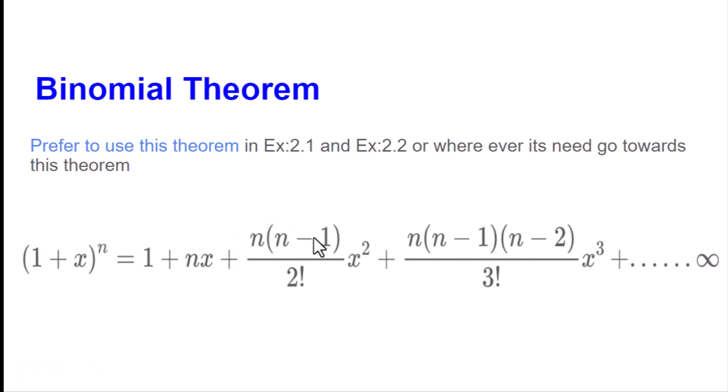You will change the power of x and n-1 will increase. Then 2 factorial will be in the denominator. Here is 1 factorial, which equals one. Next is plus n(n-1)(n-2)/3! x³, and the next step will increase the power of x.